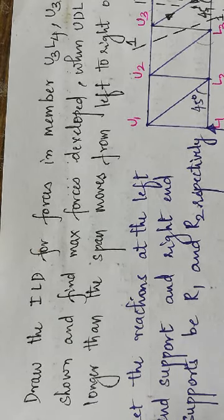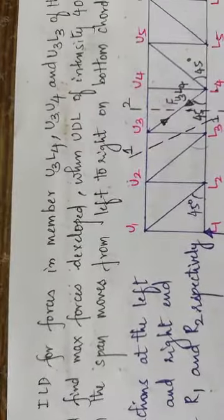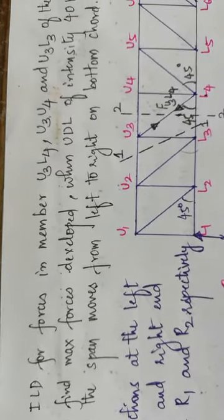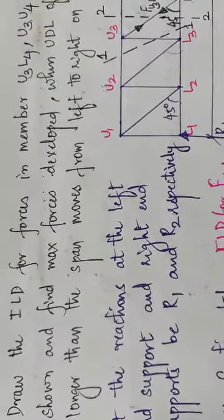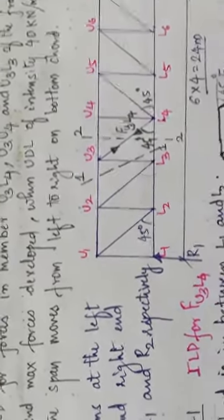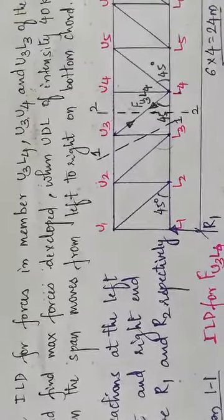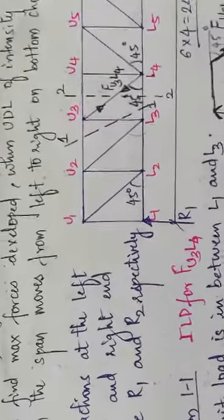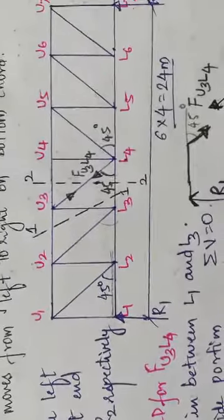Hello students, today we are doing one more problem on influence line diagrams. Draw the influence line diagram for the forces in members u3l3, u3u4, and u3l4 of the frame as shown in the figure, and find the maximum force developed when a UDL of intensity 40 kilo Newtons per meter moves from left to right on the bottom chord.